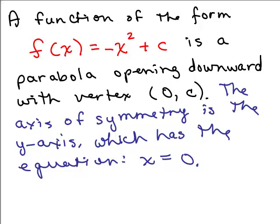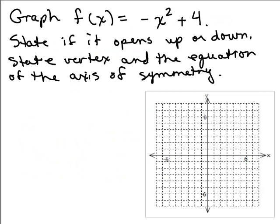Now try one yourself: graph f(x) = -x² + 4 as accurately as possible on graph paper. State whether the parabola opens up or down, state the vertex as an ordered pair, and state the equation of the axis of symmetry. Put the video on pause and try it on your own first. You can either plug in ordered pairs or use another method.